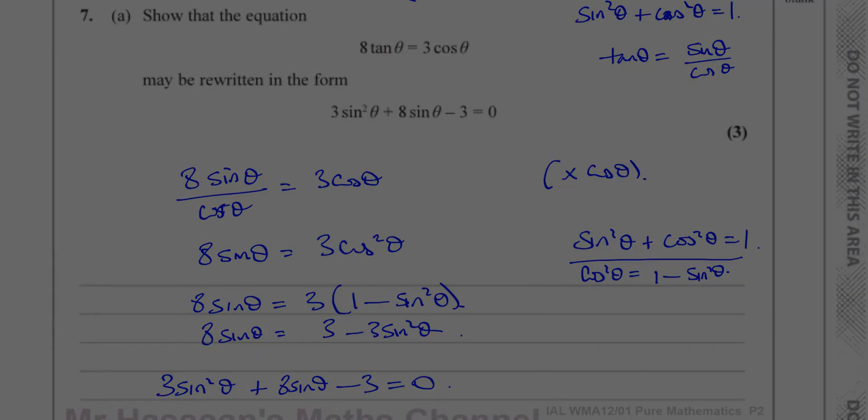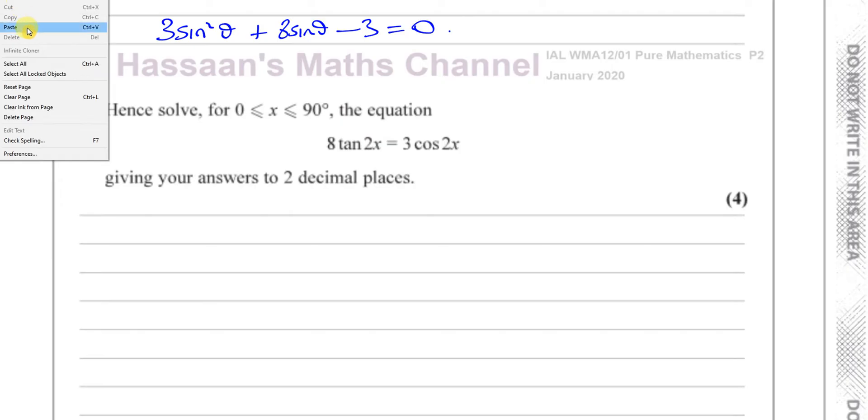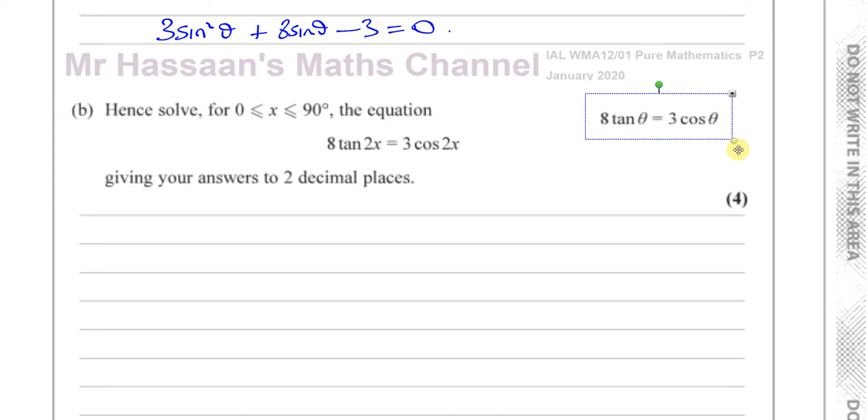So basically, what we can see from this, what we have in the first part of the question is that 8 tan theta equals 3 cosine theta can be rewritten as 3 sine squared theta plus 8 sine theta minus 3 equals 0. So we've shown how that becomes that. This is of the same type, exactly. This is 8 times the tan of an angle equals 3 times the cosine of the same angle.